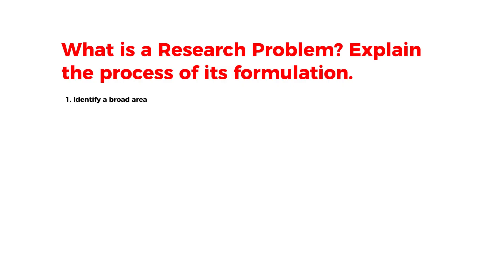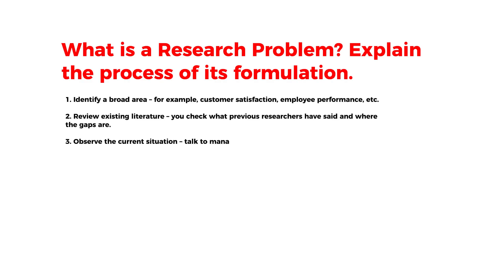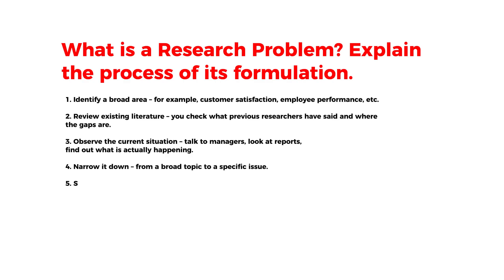Step 1: Identify a broad area — for example, customer satisfaction, employee performance, etc. Step 2: Review existing literature — check what previous researchers have said and where the gaps are. Step 3: Observe the current situation — talk to managers, look at reports, find out what is actually happening. Step 4: Narrow it down from a broad topic to a specific issue.